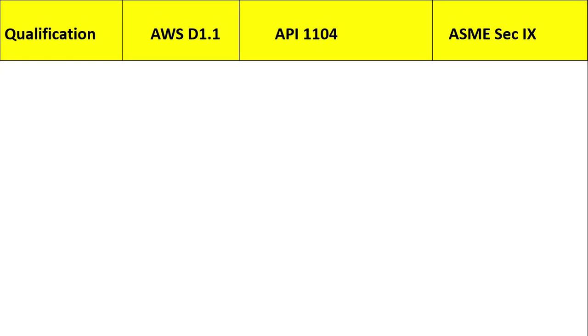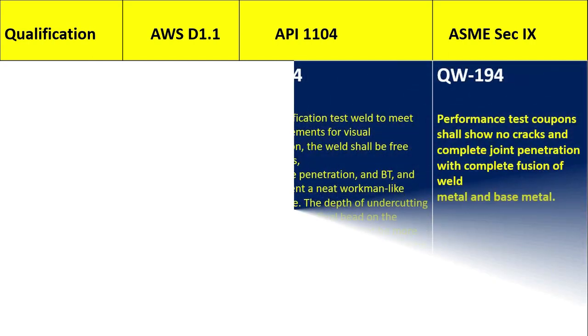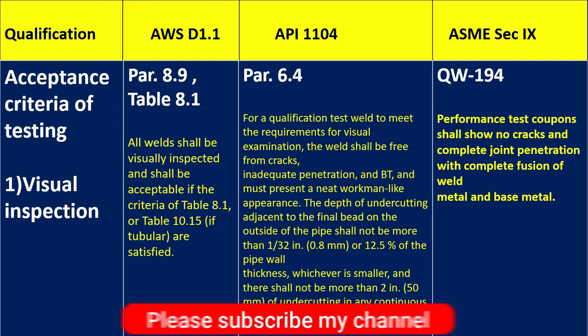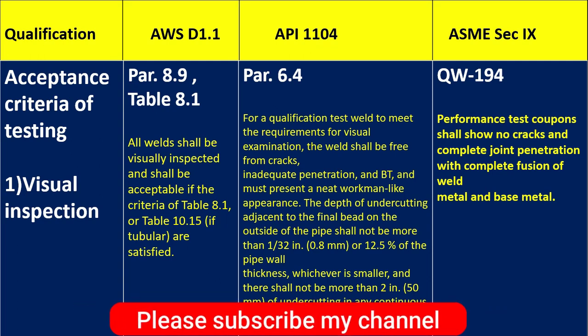Let's start. This is the welder qualification table for AWS D1.1, and the ASME Section 9. We will discuss the acceptance criteria for testing. First is visual inspection. For welder qualification, if you go to para 8.9 and table 8.1, it is clearly mentioned that all welds shall be visually inspected and shall be acceptable if the criteria of table 8.1 or table 10.1 are satisfied.